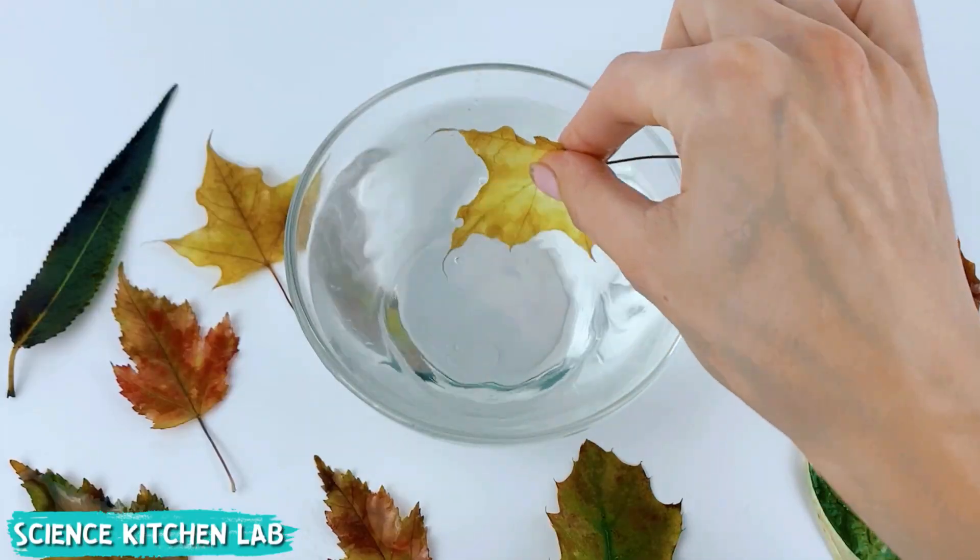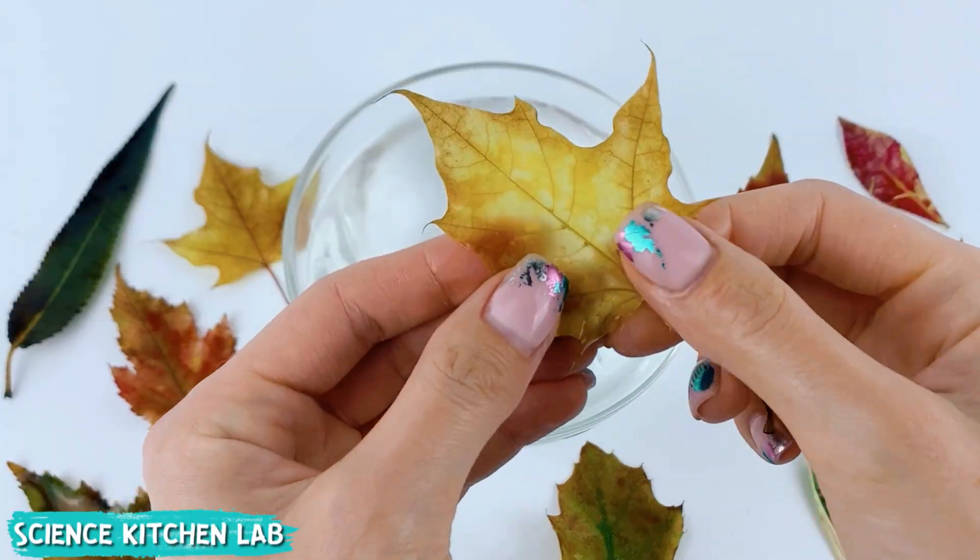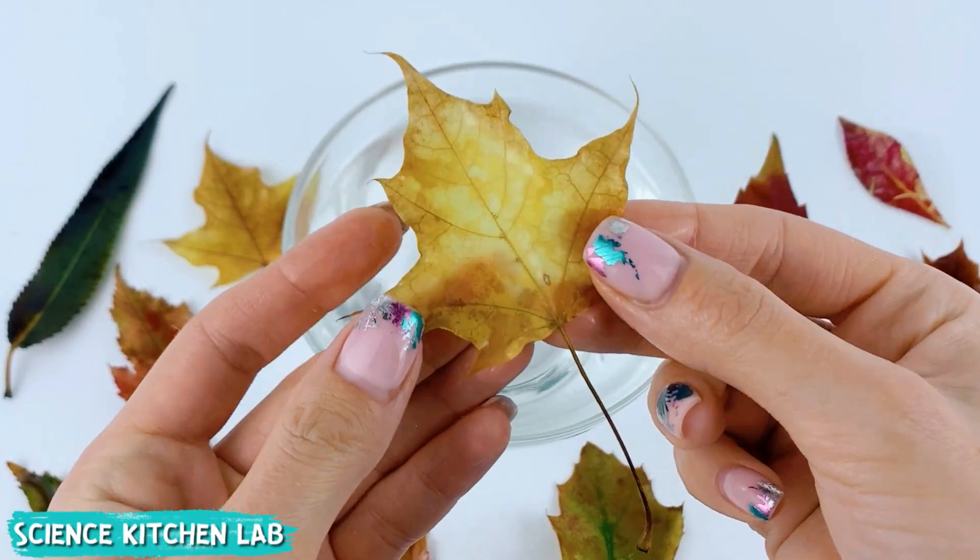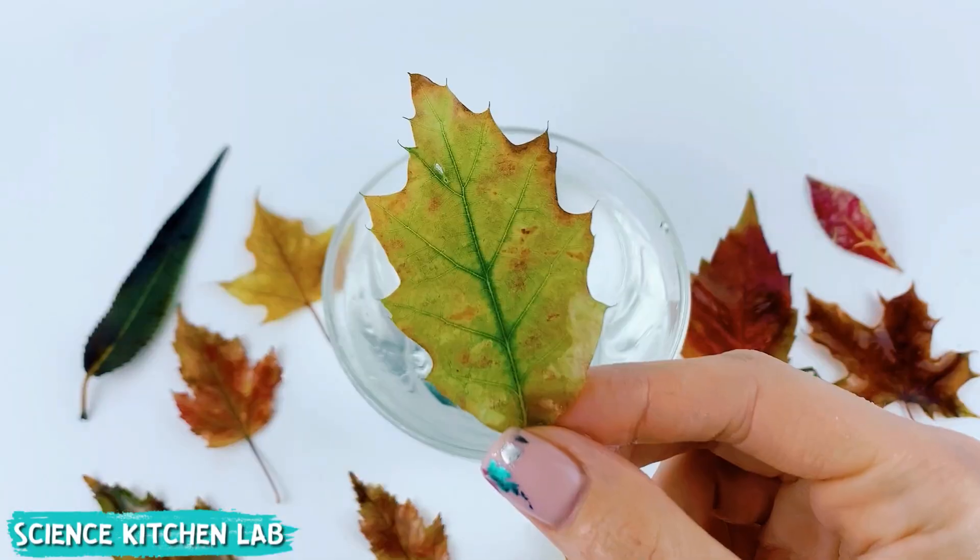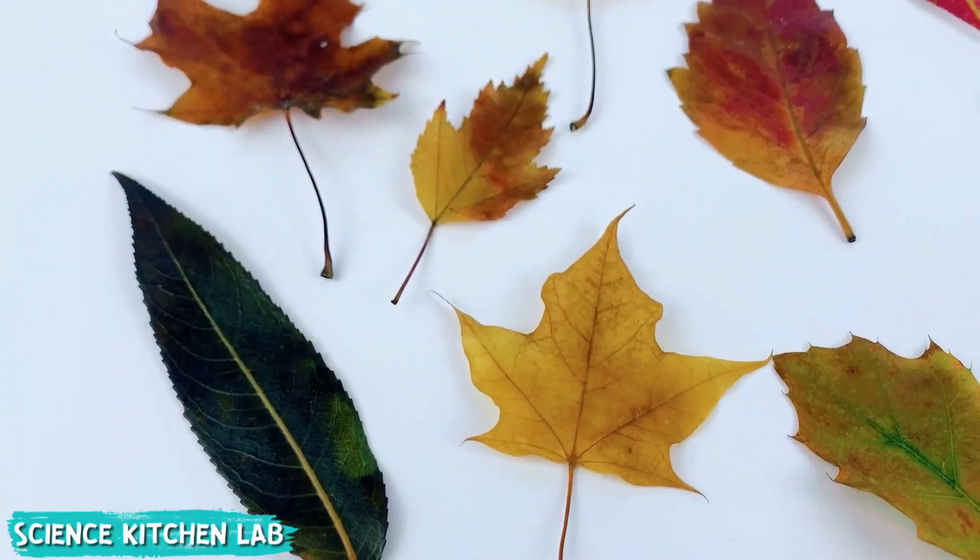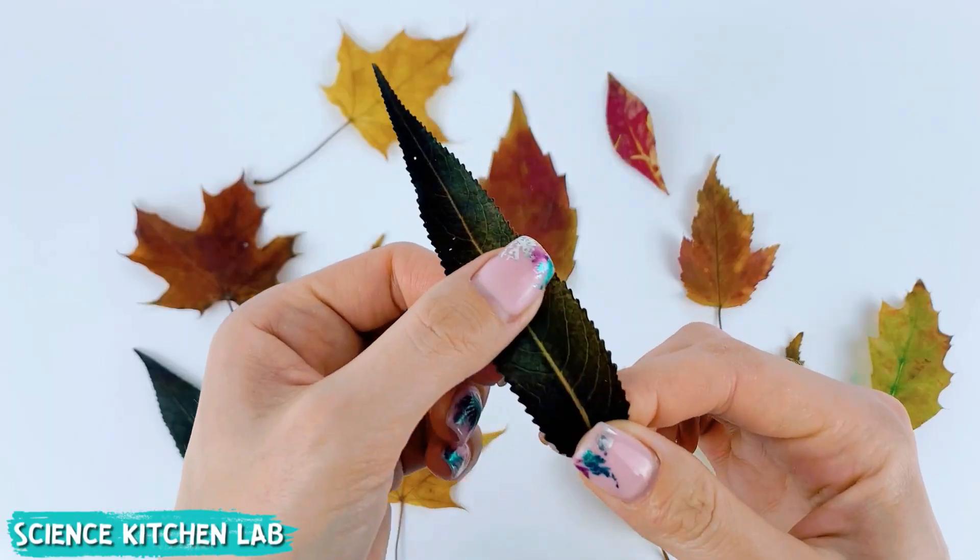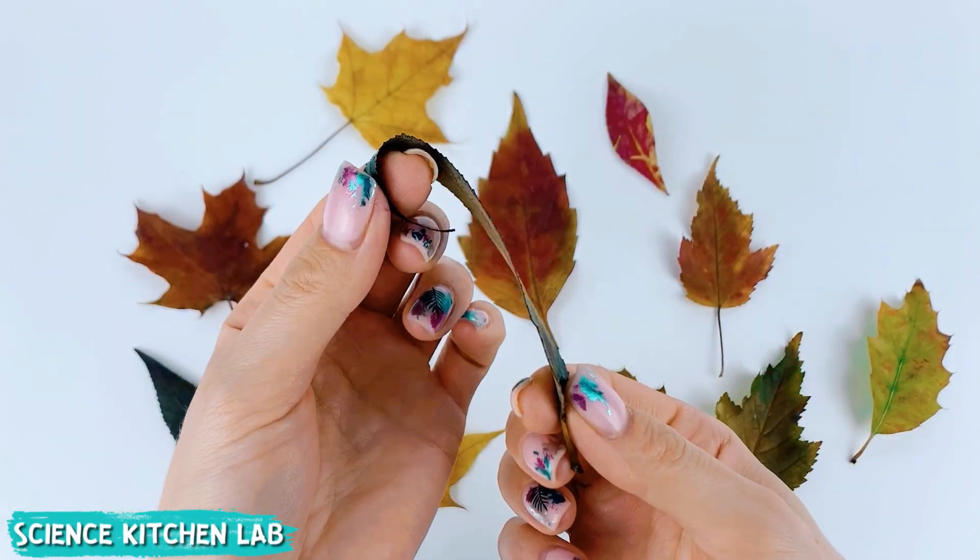Everything brilliant is simple. Glycerin gradually penetrates the leaf cells and replaces the water, preventing the leaf from drying out and deteriorating. This process is called preservation. Essentially we're creating mummy leaves that retain their beauty and flexibility for a long time.